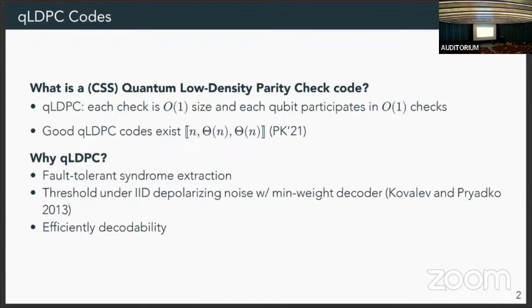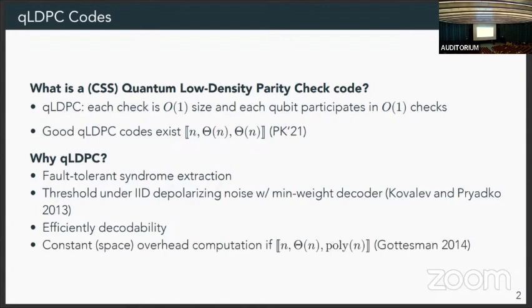The other thing that we usually get for free is that the QLDPC property, whenever we construct our codes with expander graphs, this lends itself to efficient decoders. In particular, we can oftentimes use a greedy approach to decoding, just flipping bits to reduce the syndrome until it gets reduced down to zero. Finally, Gottesman showed in 2014 that if we have a code with constant rate and polynomially growing distance, that this allows us to do fault-tolerant computation with constant space overhead. We'd really like to see, can we realize this in the setting where we're limited by only geometrically local gates instead of the long-range gates that Gottesman assumed.